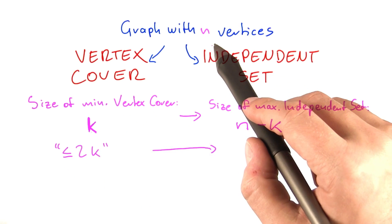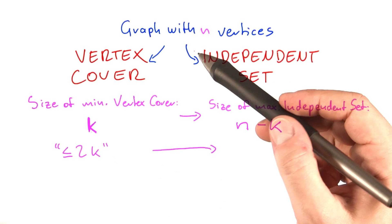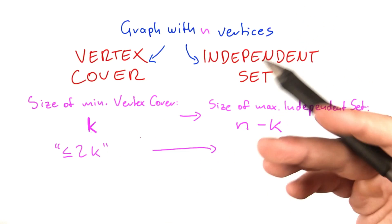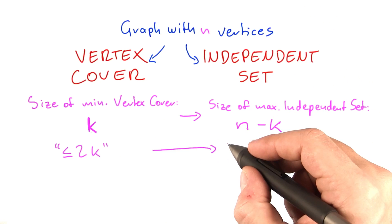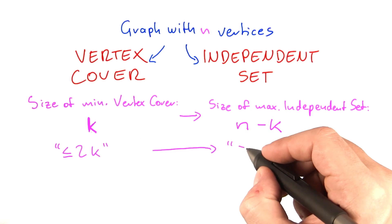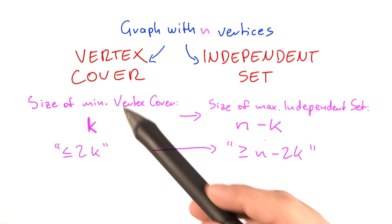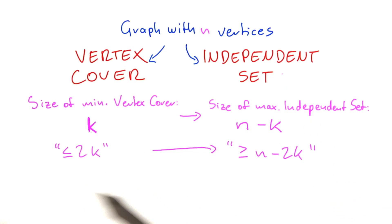What that means for the independent set is if we take those n vertices and take away those 2k vertices, we still arrive at an independent set, and that independent set has a size of at least n minus 2k, because the size of the vertex cover and independent set always add up to n.